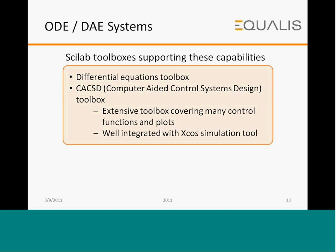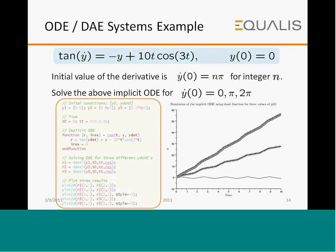Take an example: solve the differential equation tan(dy/dt) = -y + 10c·cos(3t), with Y(0) = 0, and the initial value of the derivative dy/dt(0) = nπ for n = 0, 1, and 2. We get three sets of initial conditions. The code on the left defines the variables and function used for solving differential algebraic equations. The plot on the right shows y as a function of time — three graphs corresponding to the three sets of initial conditions.